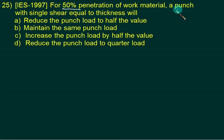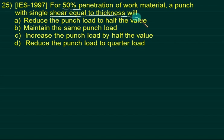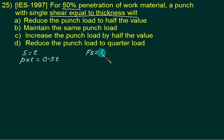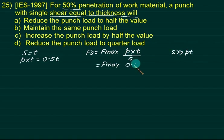Example (objective): For 50% penetration and shear S = t (shear equals thickness), using Fs = F_max × p × t / S = F_max × 0.5t / t = 0.5 × F_max (assuming S >> p×t). Therefore the punch load is reduced to half the value.